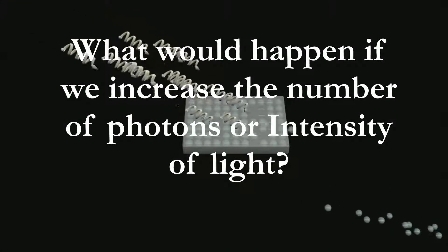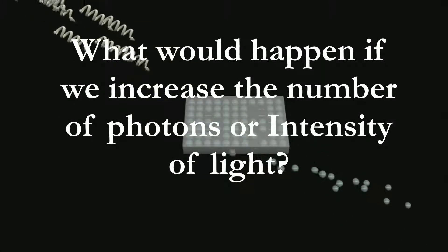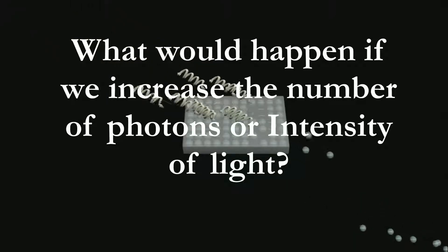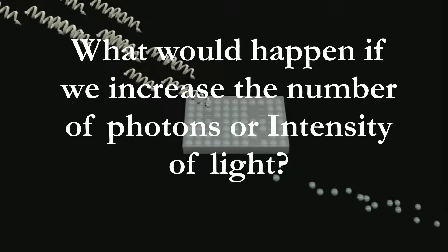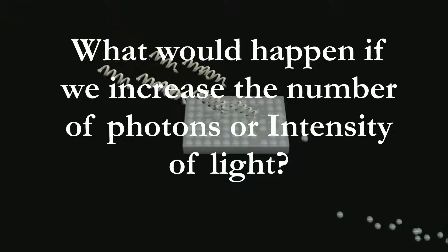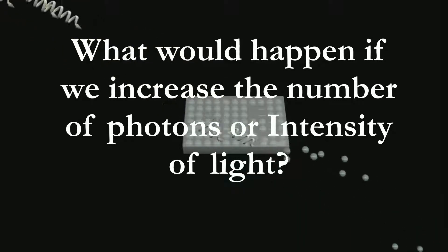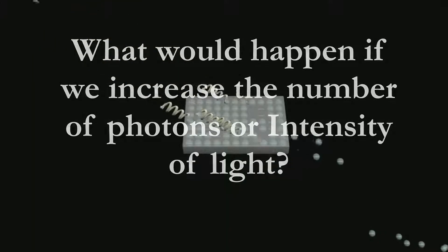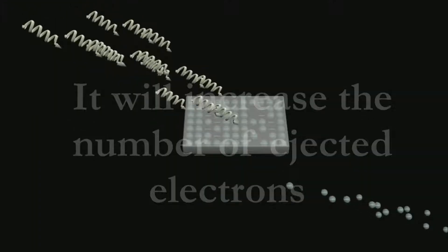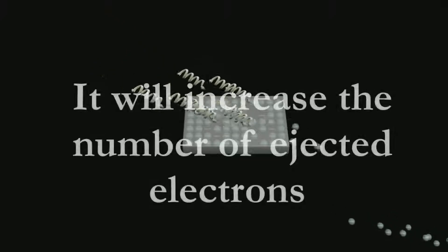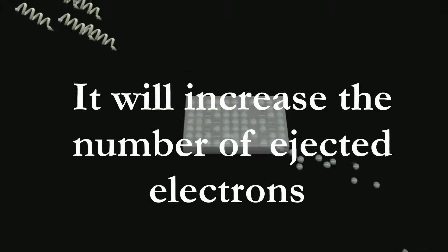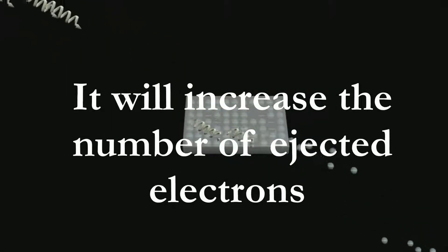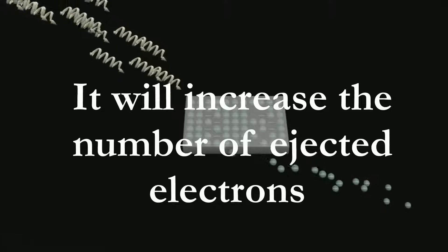Now, what would happen if we increase the number of photons — or we can say, if we increase the intensity of the incident light? When we increase the intensity of the incident light, it will increase the number of ejected electrons from the metal surface.